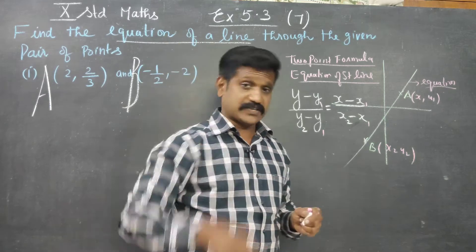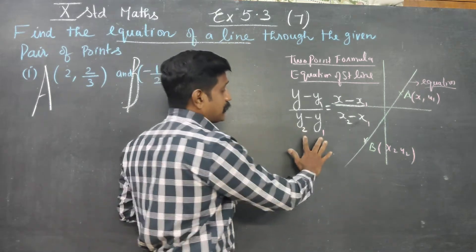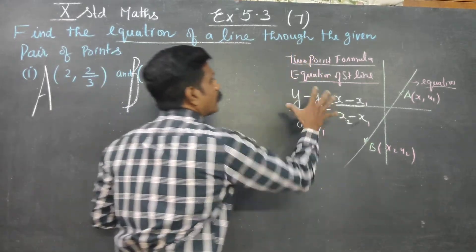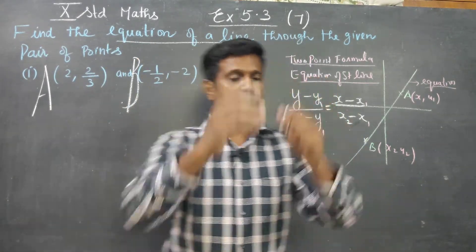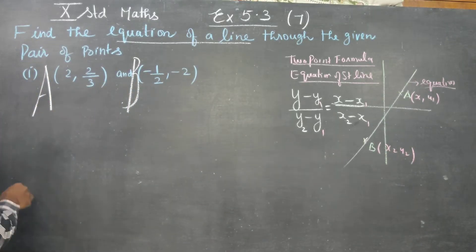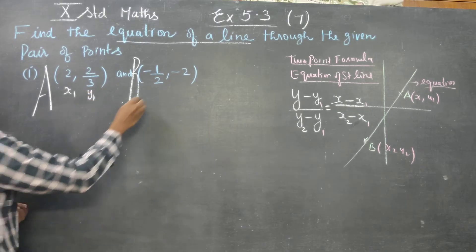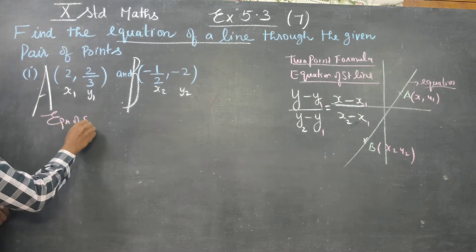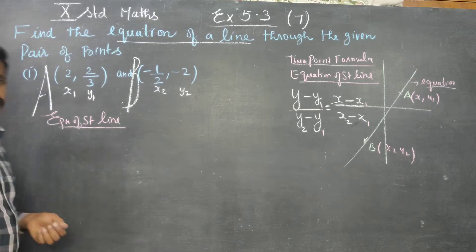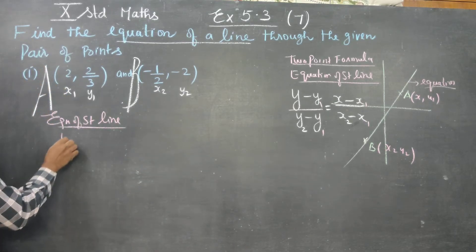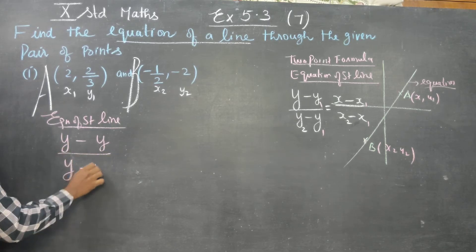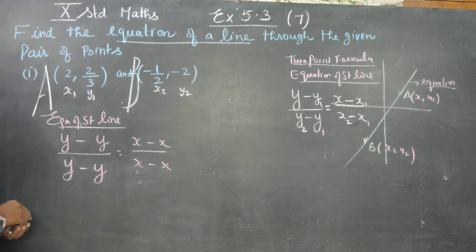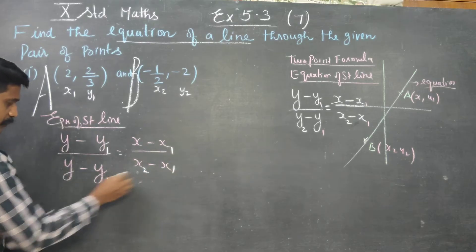The two point formula is: y2 minus y1 by x2 minus x1. In this formula, to find the equation of the straight line, I am going to name the first point x1, y1 and the second point x2, y2. Now I am going to enter into the sum using the equation of straight line formula.